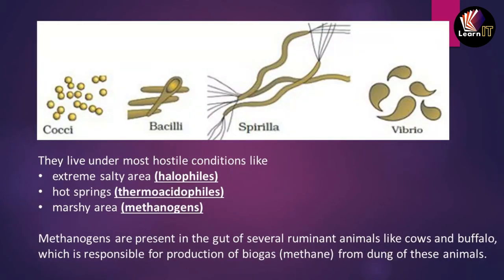The different sizes and shapes of bacteria — cocci, bacilli, spirilla, and vibrio — have been shown in the diagram. Bacteria can live in the most hostile and extreme conditions. For example, if they live in extremely salty areas, they are called halophiles.